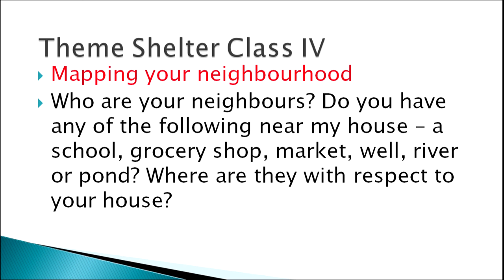Moving further in the same sub-theme in class 4, questions are like: Who are your neighbors? Do you have any of the following near your house — a school, a grocery shop, market, well, river, or pond? Where are they with respect to your house? This gives a sense of direction. In class 3, children are asked to draw; in class 4, they are asked about relative positions. Mapping begins in class 3 through a basic two-dimensional representation of the classroom, so that by class 5 they can read and draw simple aerial views of their locality or city. In class 3, children are also introduced to a map of Agra with familiar icons and a narrative describing two children visiting the city, helping them relate to the abstract iconic map.